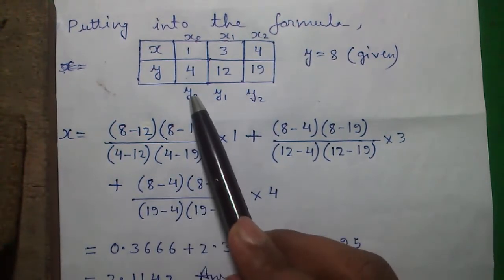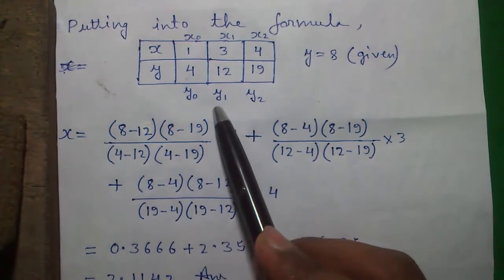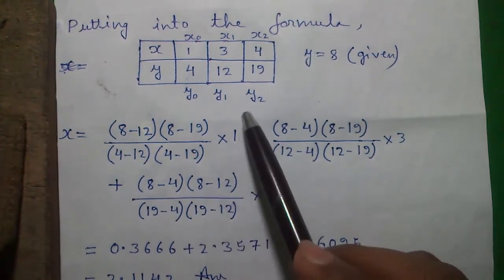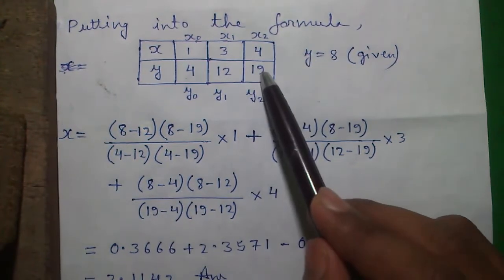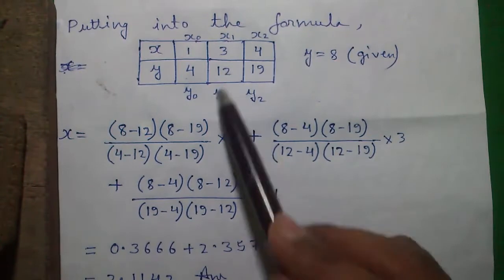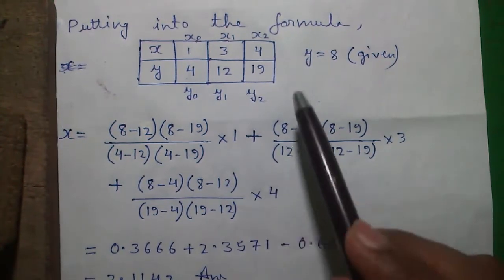Next y minus y0, that is 4, y minus y1, that is 12 divided by, this is y2 term. So we will subtract everything from y2. Y2 is 19, so 19 minus 4 and 19 minus 12 into x2. So x2 is 4.